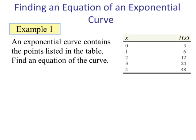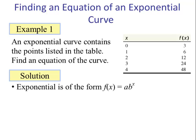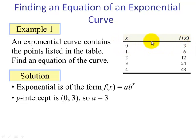Example 1. An exponential curve contains the points listed in the table. Find the equation of the curve. An exponential function is in the form f(x) = a times b to the x power. Our first step is to find the value of a. The value of a is also the y-intercept — the value of y when x is 0. So a in this case is 3.